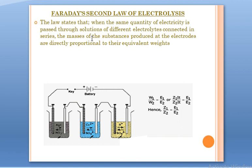Faraday's second law of electrolysis. Here we take a series of electrolytes connected together with a source — AgNO₃ in one electrolytic cell, copper sulfate in another, H₂SO₄ in another. The law states that when the same quantity of electricity is passed through solutions of different electrolytes connected in series, the masses of substances produced at the electrodes are directly proportional to their equivalent weights.